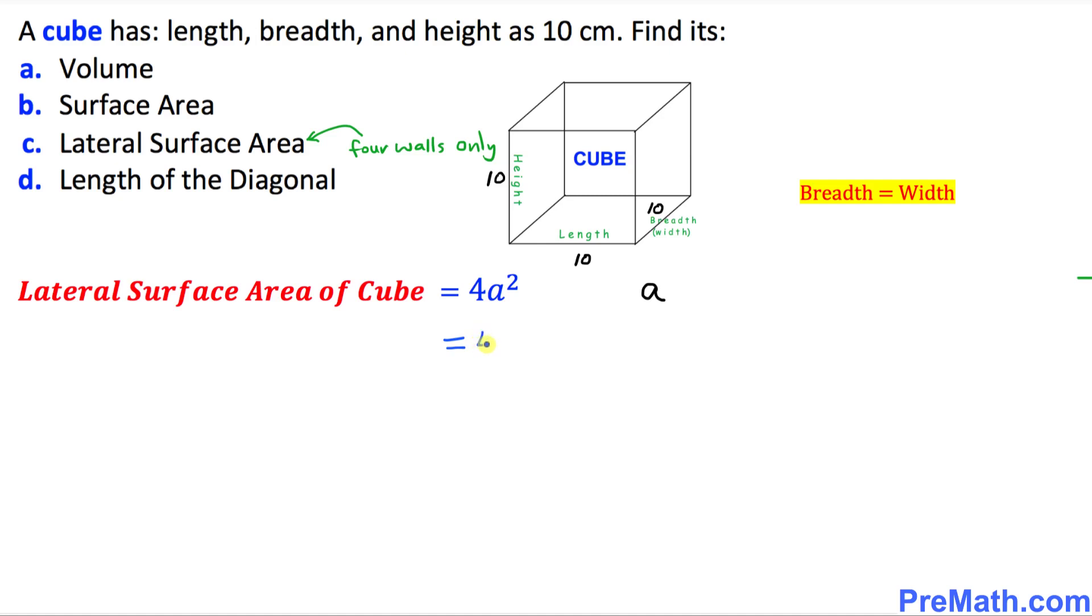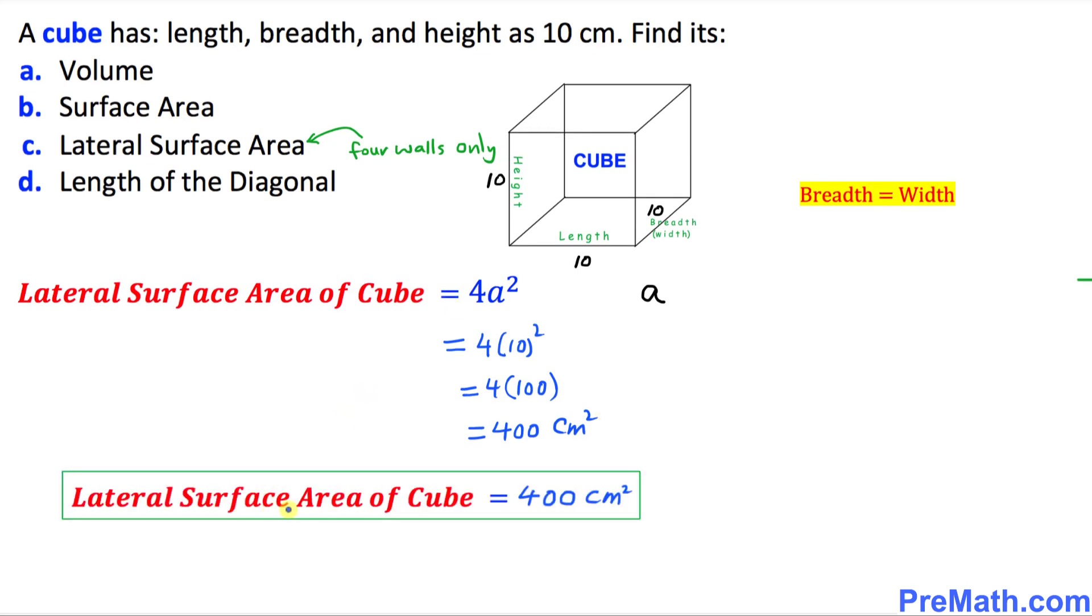4 times, and we know a is 10 units. 10 squared gives us 4 times 100, which equals 400 square centimeters. The lateral surface area of this cube is 400 square centimeters, and that is our answer.